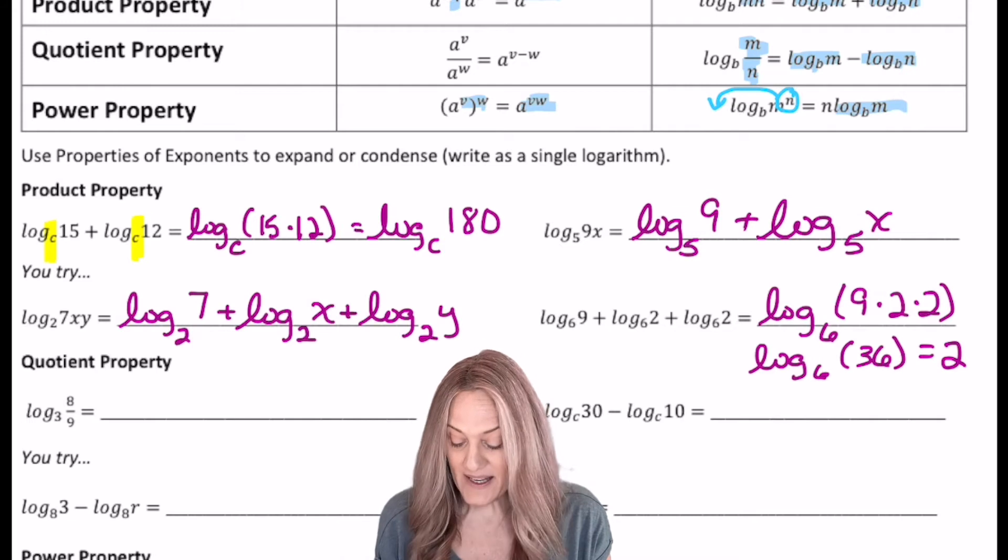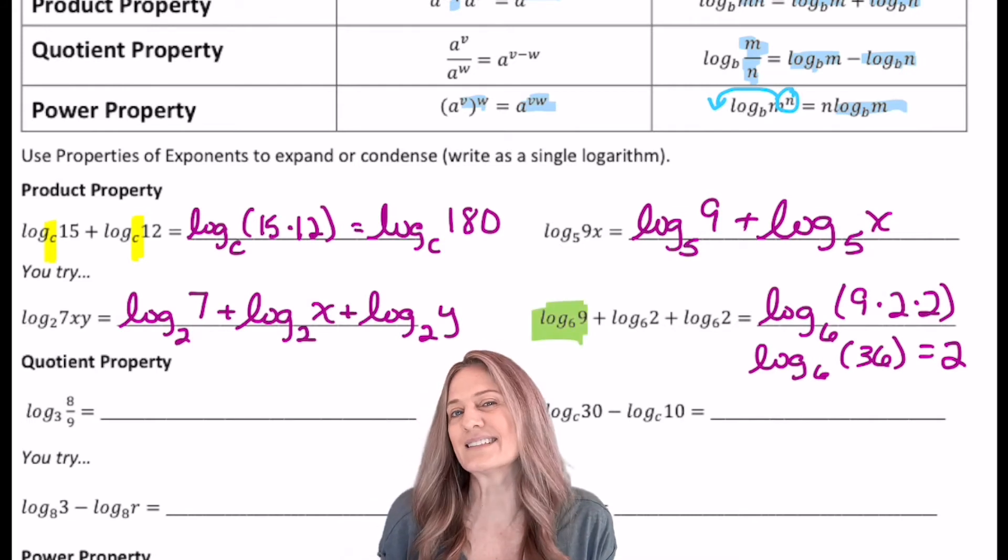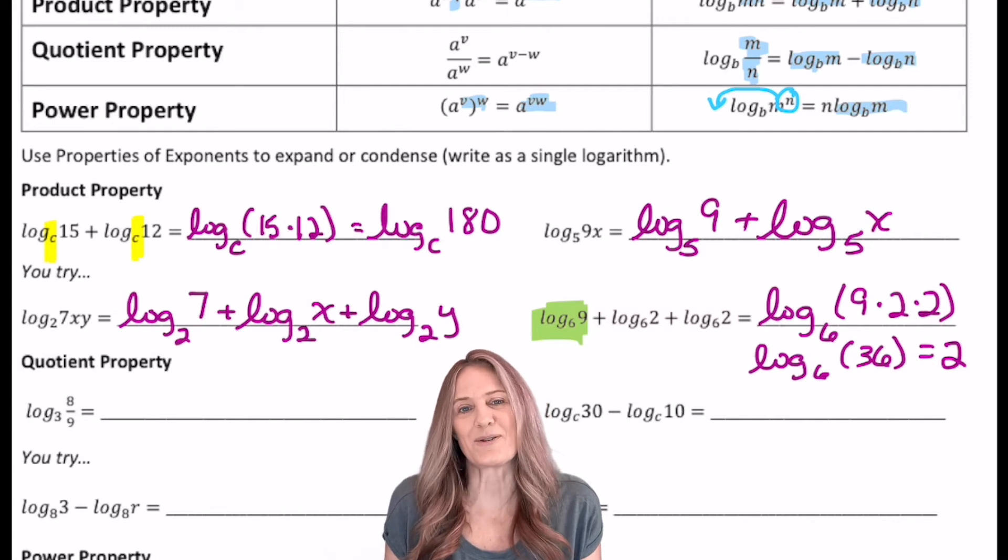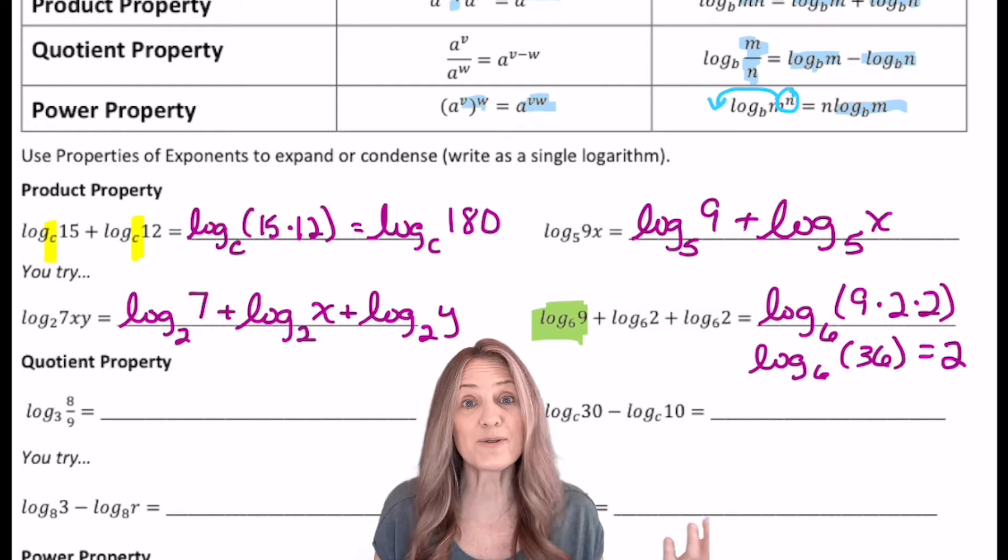Did you catch that last one where we can actually get a final answer? I really love this one because it demonstrates the need for our properties. With log base 6 of 9, I can't get an answer. But once I condense it into a single logarithm, I'm able to just say that equals 2.